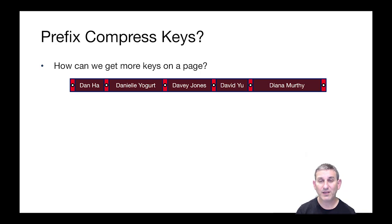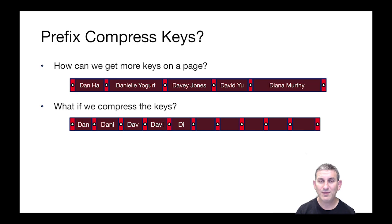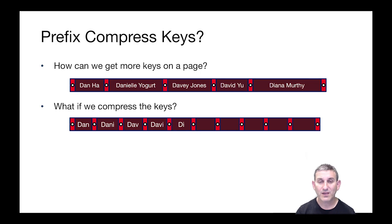Let's look at an example. We've got a page — it's an internal page for a B+ tree. Here's a compressed version of those same keys, where we're just taking the distinguishing prefix that takes each key and differs it from the key to its left. So Dan Ha and Danielle Yogurt differentiate on their fourth character. Danielle Yogurt and Davy Jones differentiate on their third character, d-a-v. Davy Jones and David Yu on the fourth character, d-a-v-i. And Diana Murthy differentiates from David Yu on the second character. So it would seem these prefixes are all we need to get the differentiation, and we've made a lot more room for more keys and pointers.